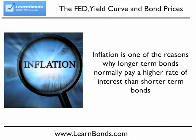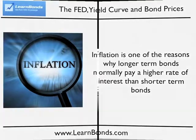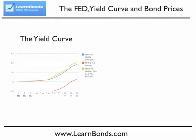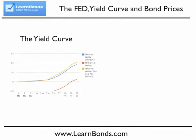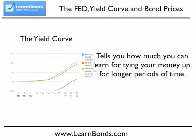By comparing the yields on the same type of bond with different maturities, we can see how much more investors require for locking their money up for longer periods of time. When you put this on a graph you get what is known as the yield curve. The slope of the yield curve changes based on market perceptions of economic growth and inflation. By watching the yield curve in the market data section here at LearnBonds, you can get clues as to where the economy is headed. It is also helpful in determining which maturity of bond you should buy.